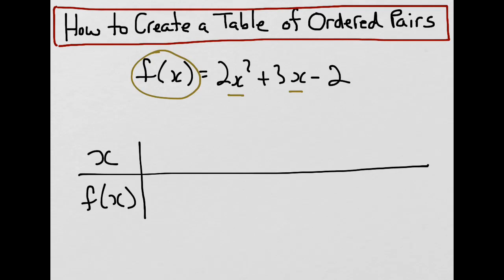Since f is dependent on x, we'll pick some values of x and solve the equation to determine the values of f. In this case, I'm going to pick seven values of x: minus 3, minus 2, minus 1, 0, 1, 2, and 3.